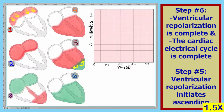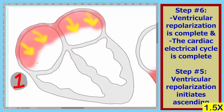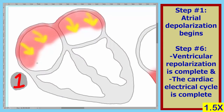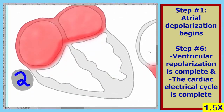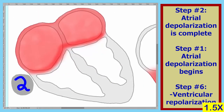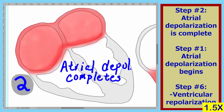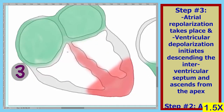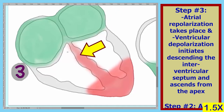Let's annotate these events. In step one, atrial depolarization begins. In step two, atrial depolarization completes. There are two events that take place in step three: the first is atrial repolarization and the second is the beginning of ventricular depolarization.